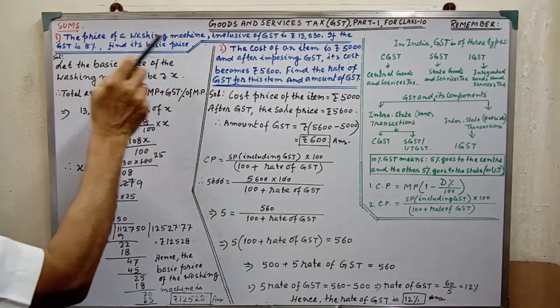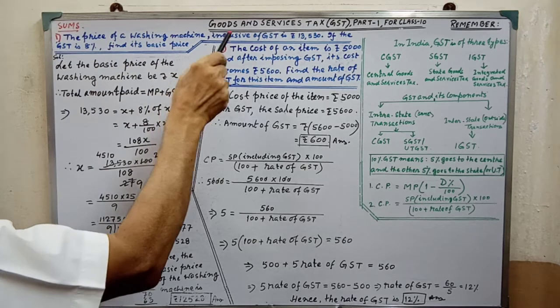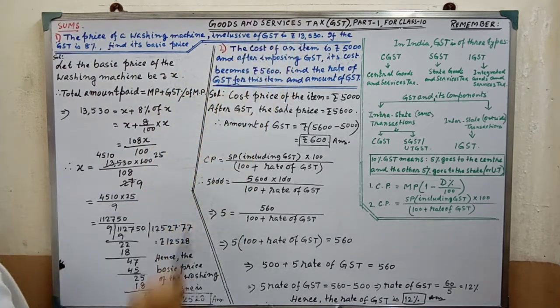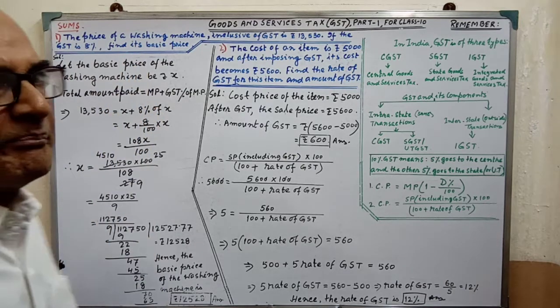Please pay your attention on the first sum. The price of a washing machine inclusive of GST is Rs. 13,530. If the GST is 8%, find its basic price.